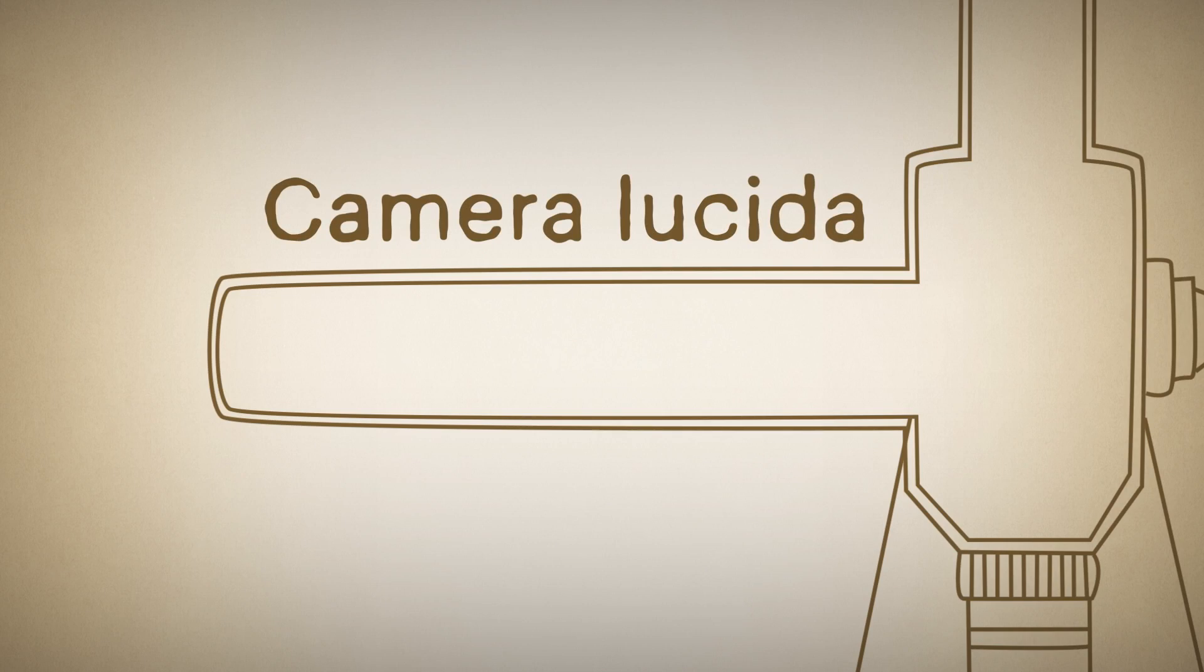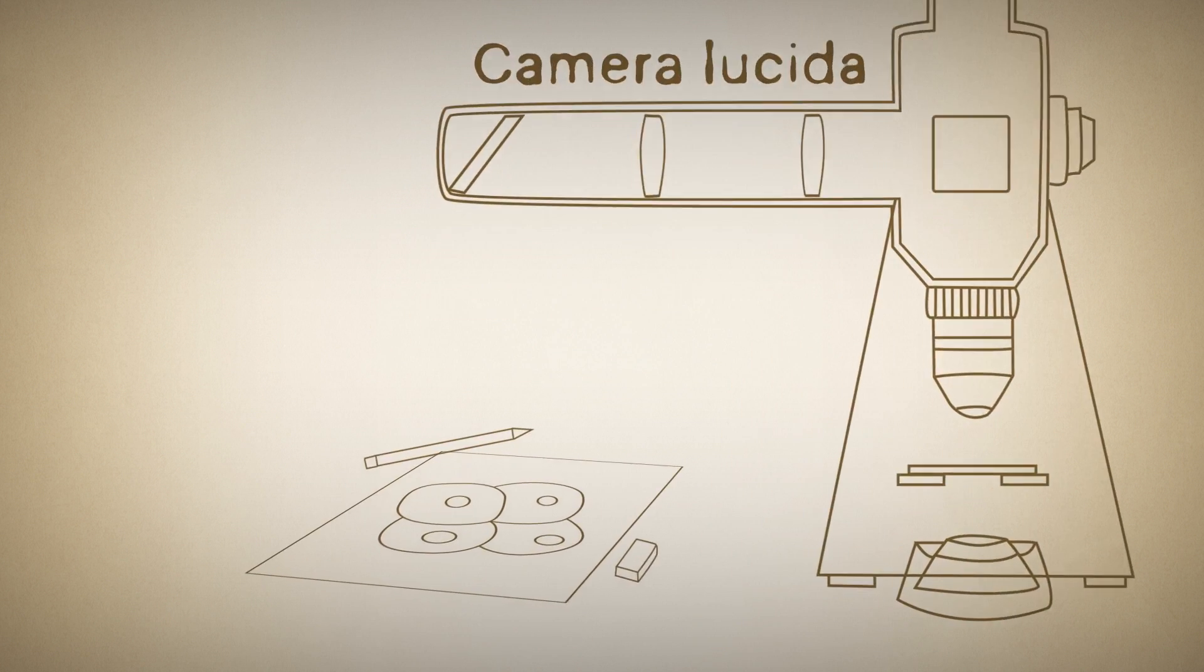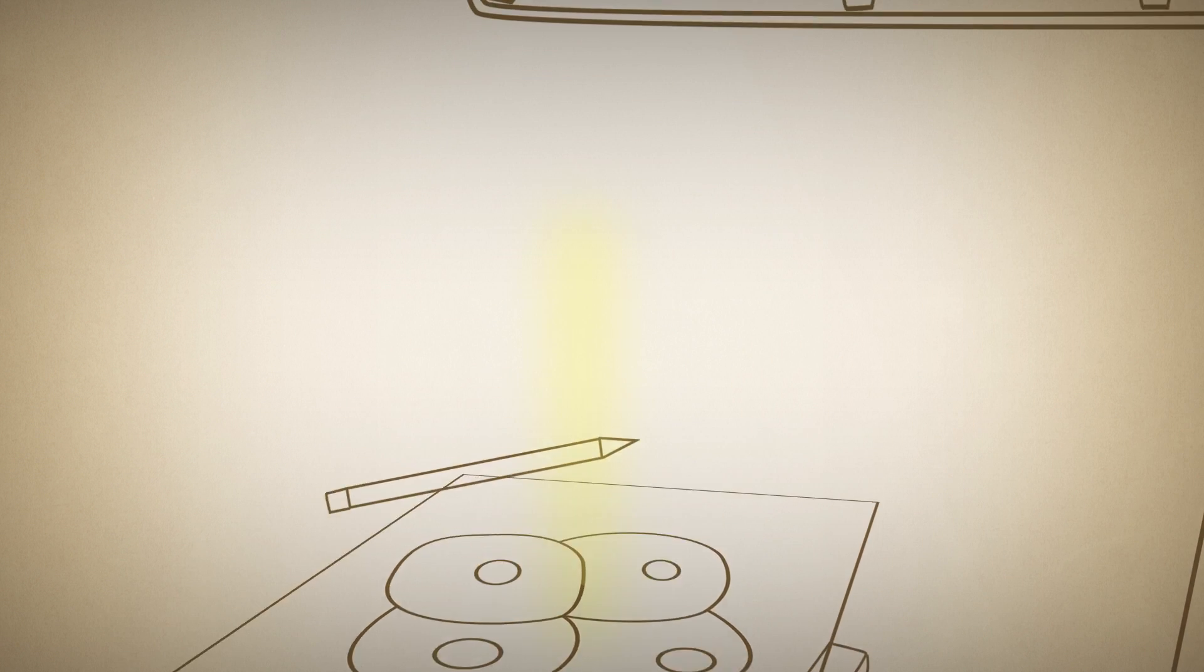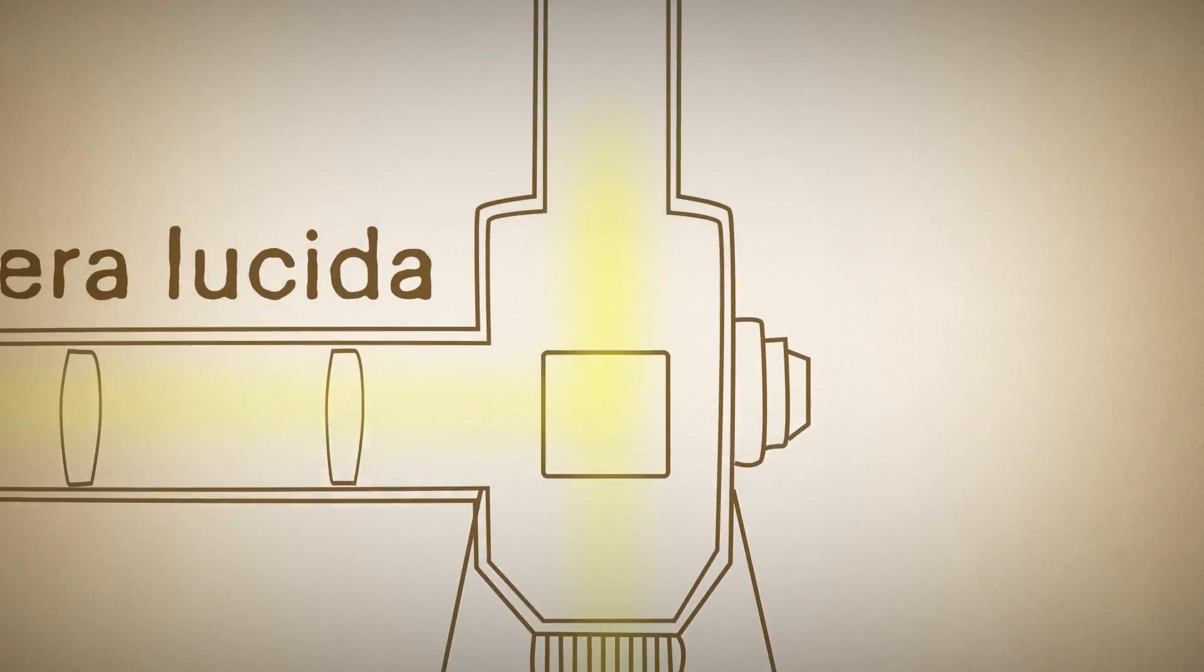"A camera lucida is essentially a series of mirrors that attaches onto the microscope. It works such that when you have a piece of paper and your hand and a pencil lying right next to the microscope, the image of that is actually reflected into the eyepiece. So when you look through the microscope, you can actually see your hand and a piece of paper and your pencil right on top of the specimen that you're interested in. This allows you to directly trace that specimen."